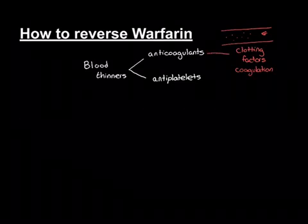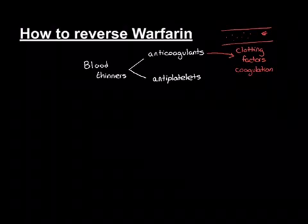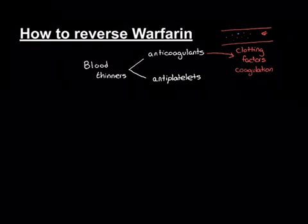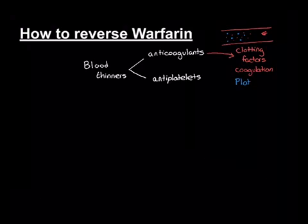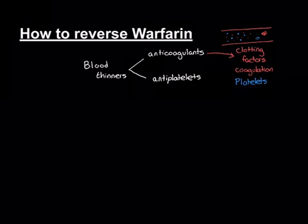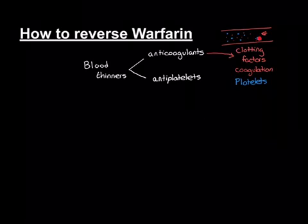Anticoagulants are drugs that target the clotting factor part of blood clot formation. But remember, there are other things that can form blood clots, which are the platelets — tiny little cell fragments. These can also aggregate together and form a solid structure, which we would also describe as a blood clot. Often blood clots will be made up of both clotting factors and platelets all aggregated together to make a superstructure.